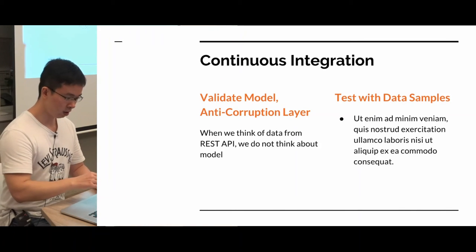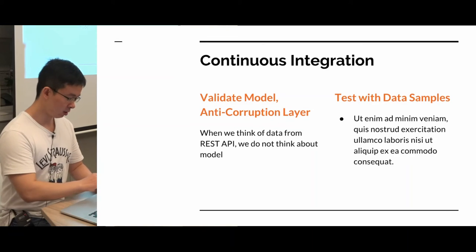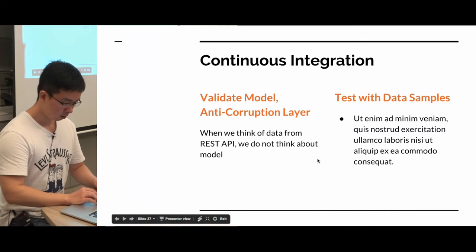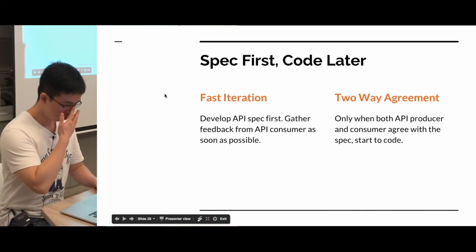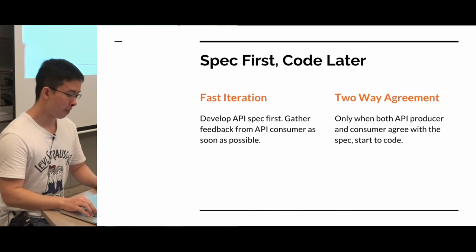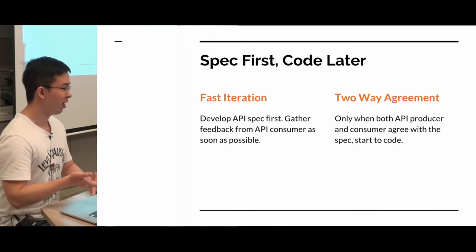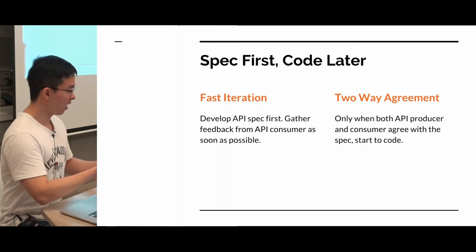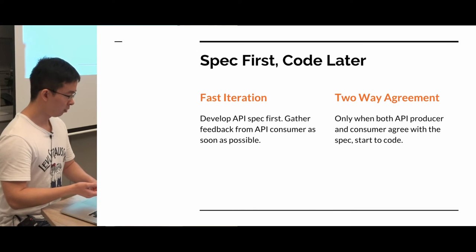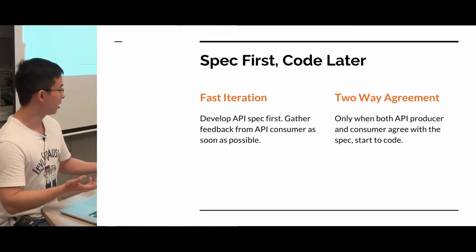Continuous integration is important because you don't know when or how a subsystem will suddenly give you the wrong data format. So for each change, please run the continuous integration.